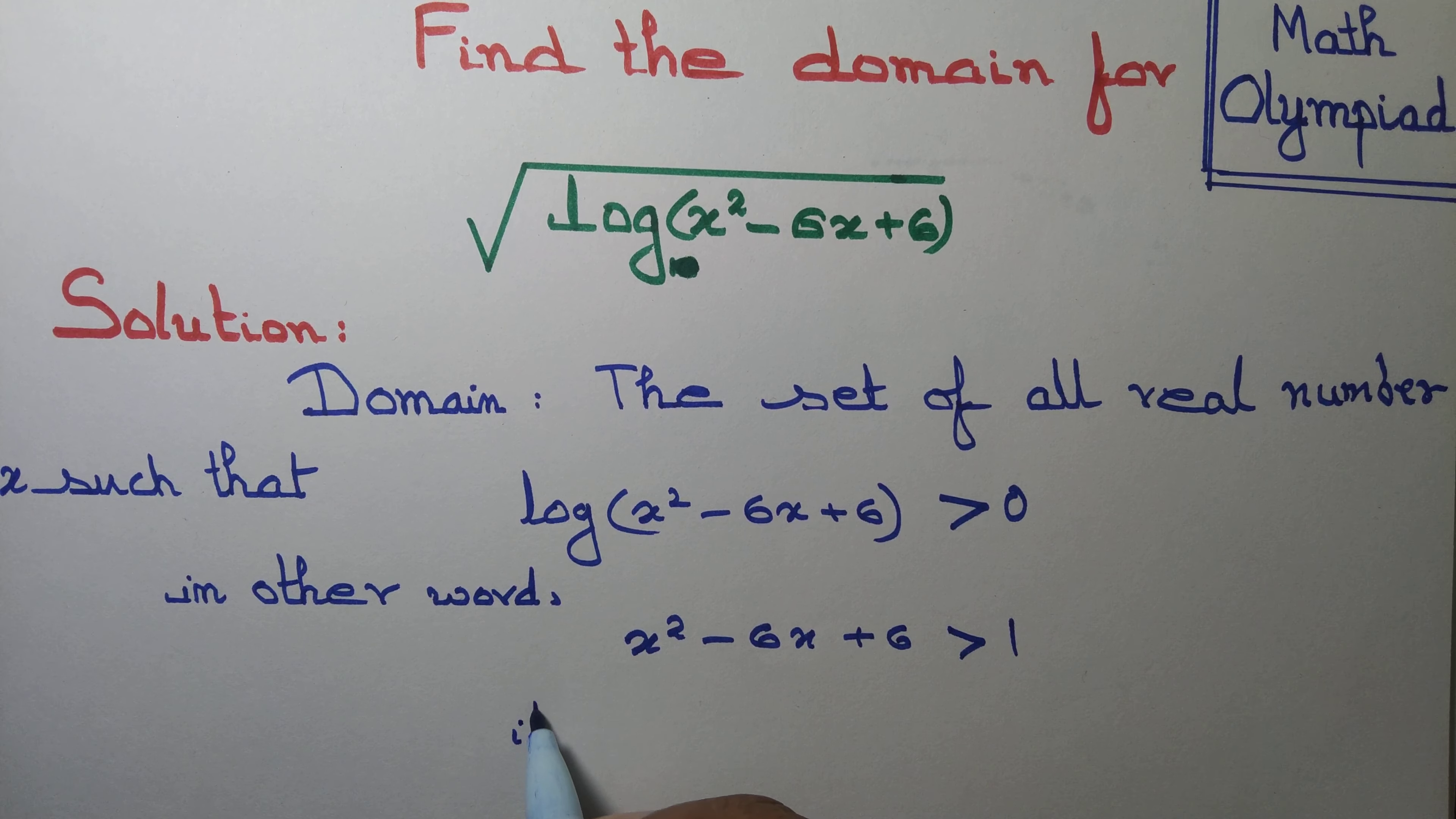So x minus 1, x minus 1 whole thing into x minus 5 is greater than 0.